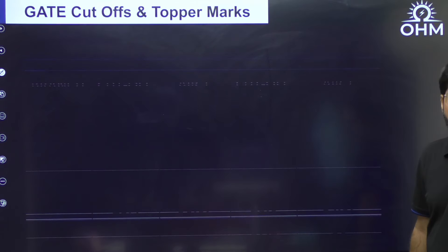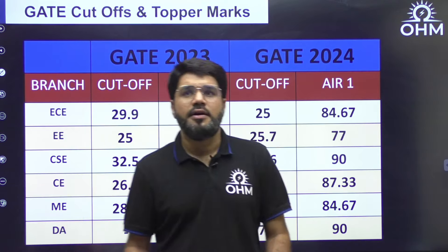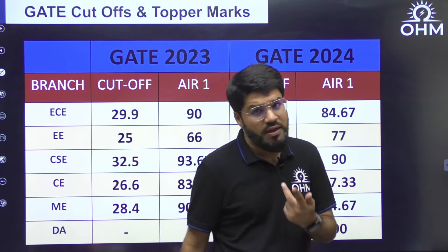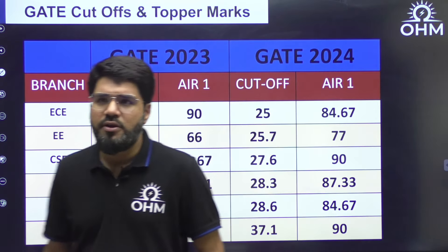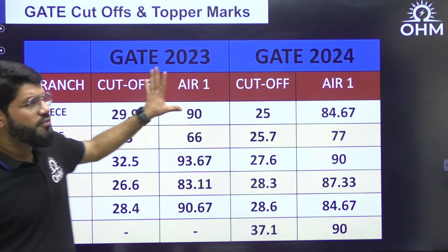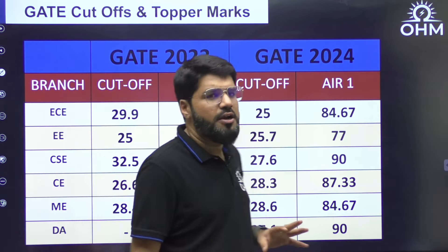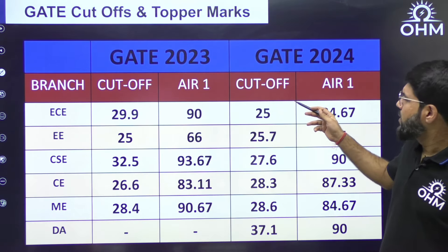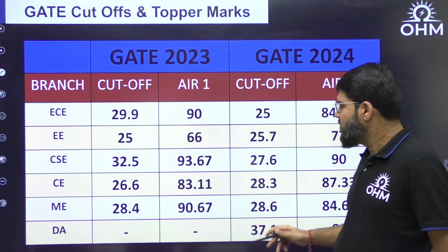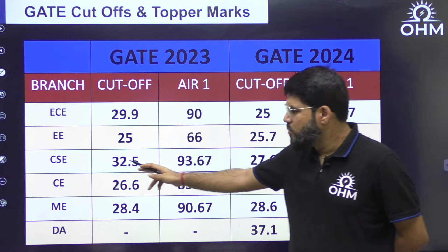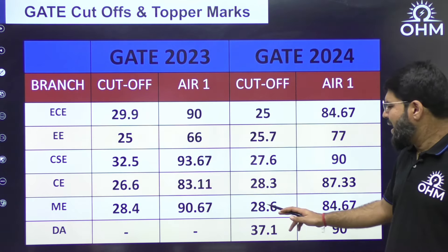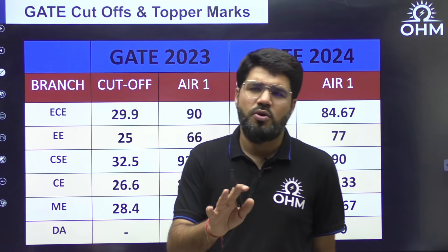Now about cutoff and topper scores. The cutoff varies year to year — mostly in the range of 25 to 30 marks — depending on paper difficulty and the number of aspirants. For comparison, here's data from GATE 2023 and GATE 2024: EC cutoff was 25 (2024) and 29.9 (2023); Electrical was 25.7 (2024) and 25 (2023); Computer Science was 27.6 (2024) and 32.5 (2023); Civil was 28.3 (2024) and 26.6 (2023); Mechanical was 28.6 (2024) and 28.4 (2023).